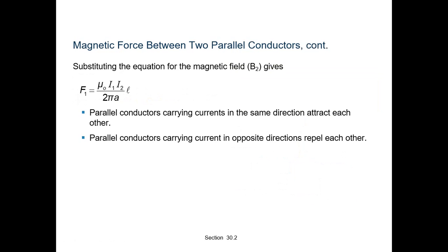Substituting the equation for the magnetic field B2 gives: F1 = μ0·I1·I2 / (2π·a) × L. Parallel conductors carrying current in the same direction attract each other, and parallel conductors carrying current in opposite directions repel each other.